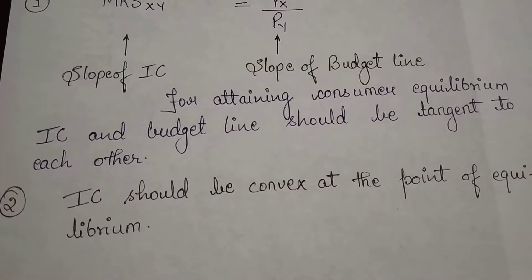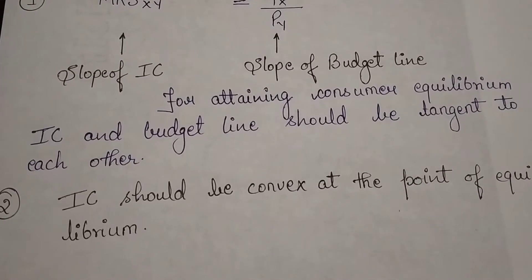Now the second condition is IC should be convex at the point of equilibrium.